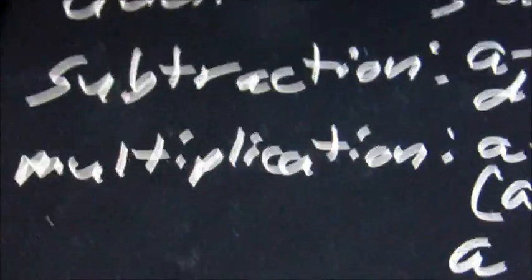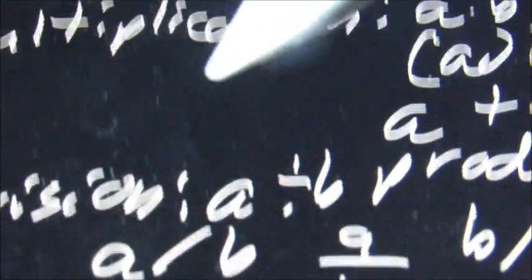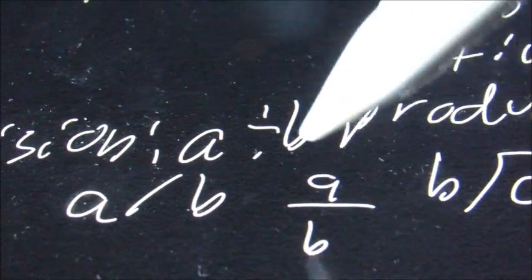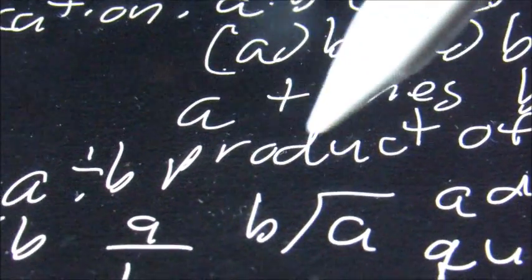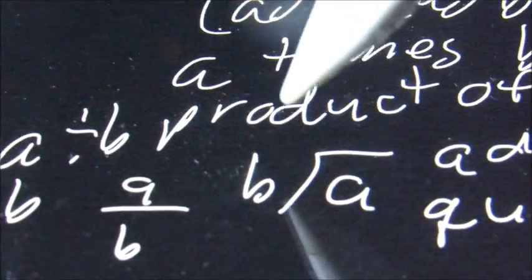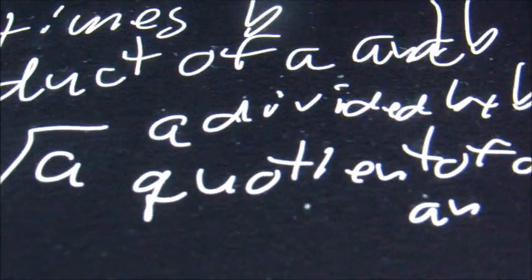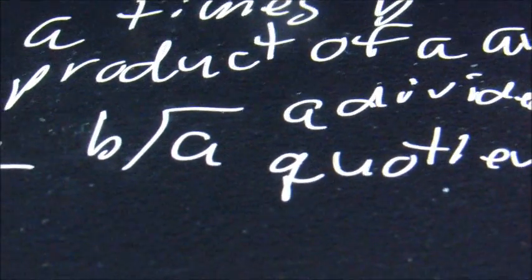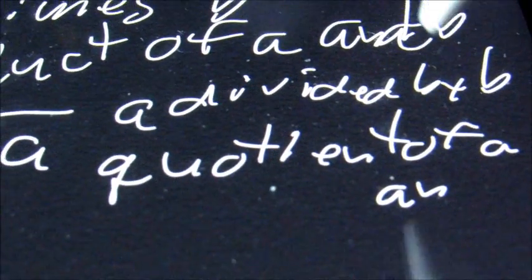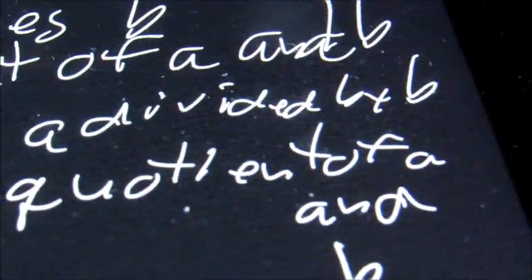For division, we could have A divided by B, A slash B, or A over B — all of which mean dividing. We can also write it as B into A, A divided by B, or quotient of A and B. Just like subtraction, the order of numbers matters, so it's A over B or A divided by B.